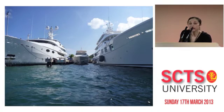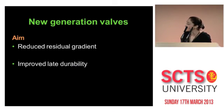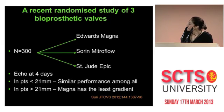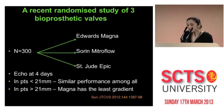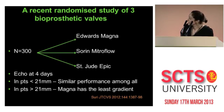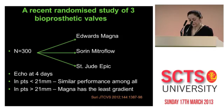Most of the studies on mismatch that you've looked at are at least 10 years old. What about some of the newer generation of valves? They aim to reduce the residual gradient and improve late durability. In a recent study by Dr. Suri and colleagues from Mayo Clinic, they looked at 300 patients in a genuine randomized study. Some received an Edwards Magna, some a Sorin Mitroflow, and some a St. Jude Epic. They did hemodynamic studies at four days and showed that in patients with valves less than 21 mm, the performance of these valves was very similar — so in the newer generation, there is no difference in patients' outcome.